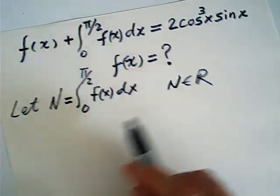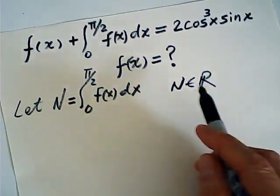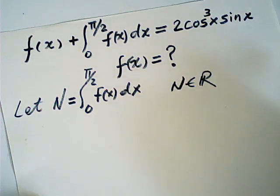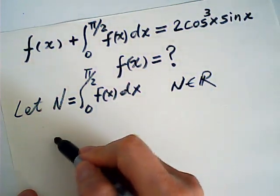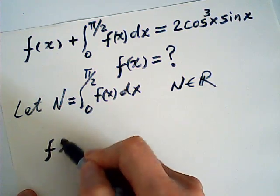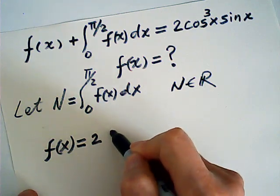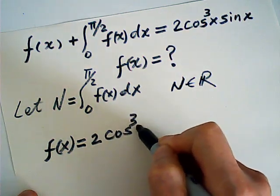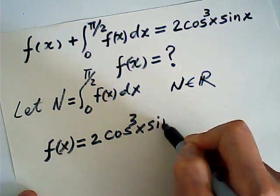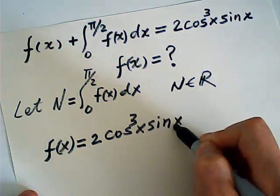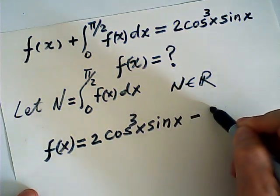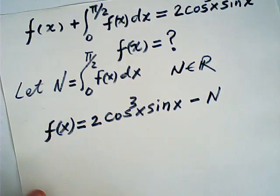So now, if you get this point, then the equation is rather easier. Therefore, it says f of x will be equal to 2 cosine cubed x sine x minus N.